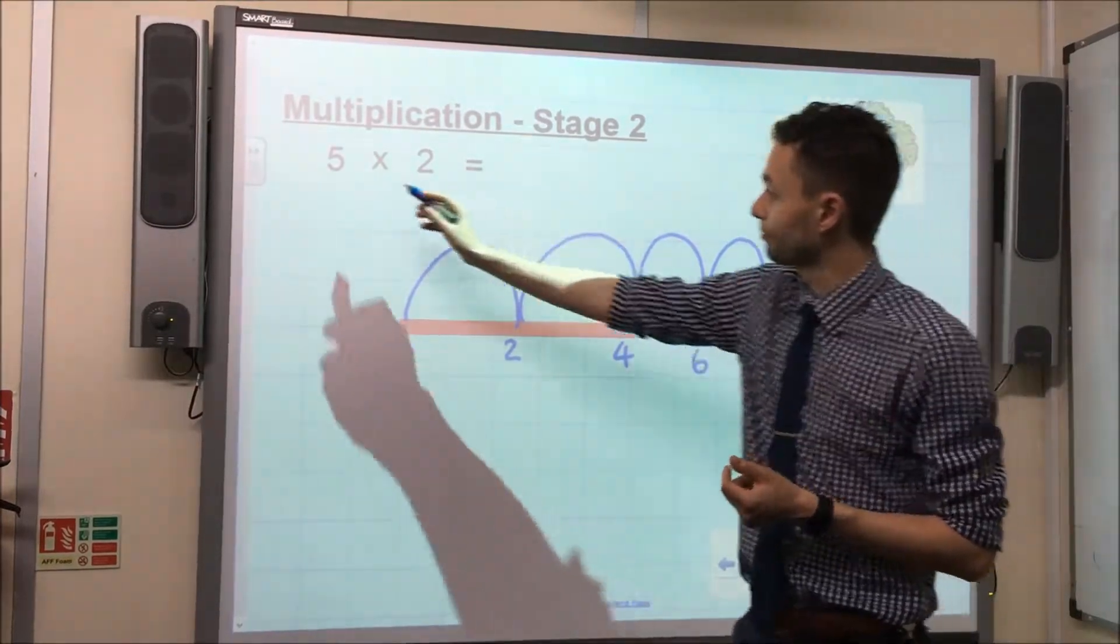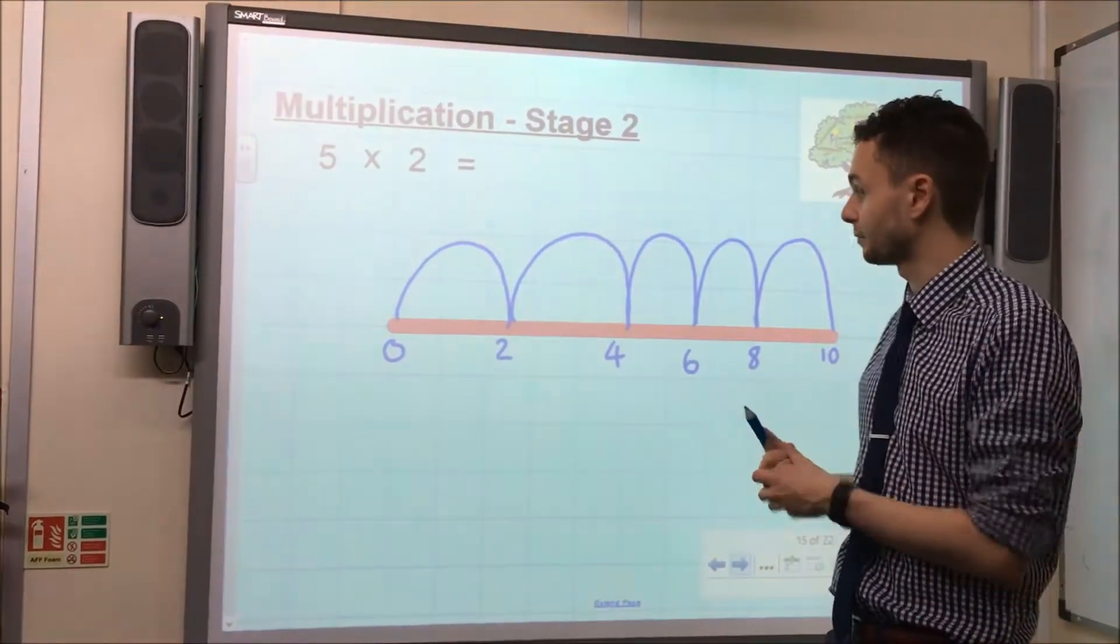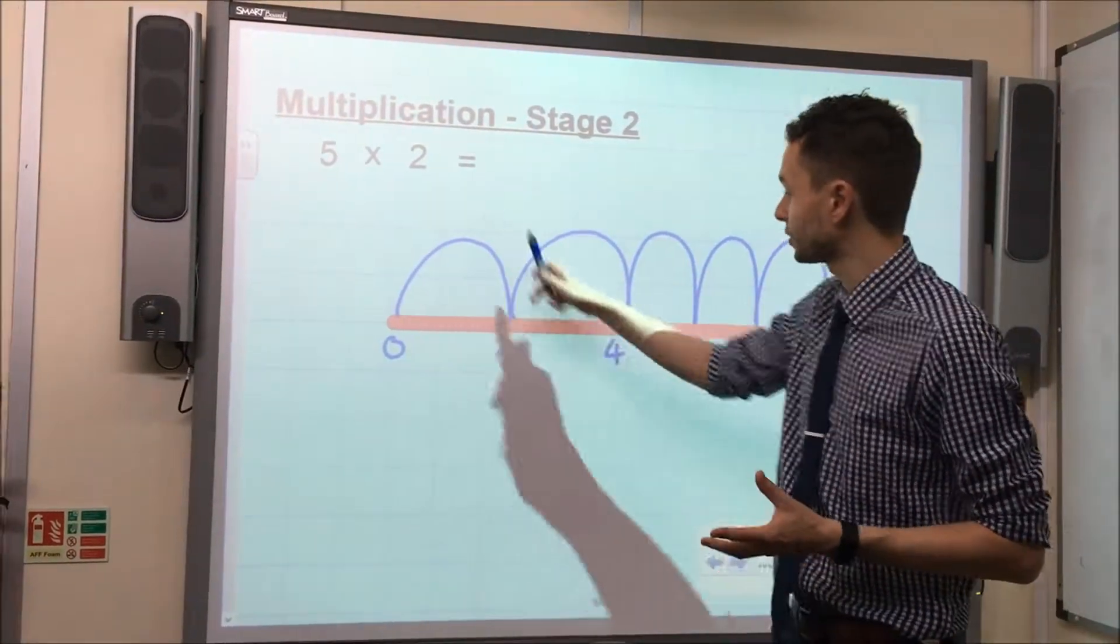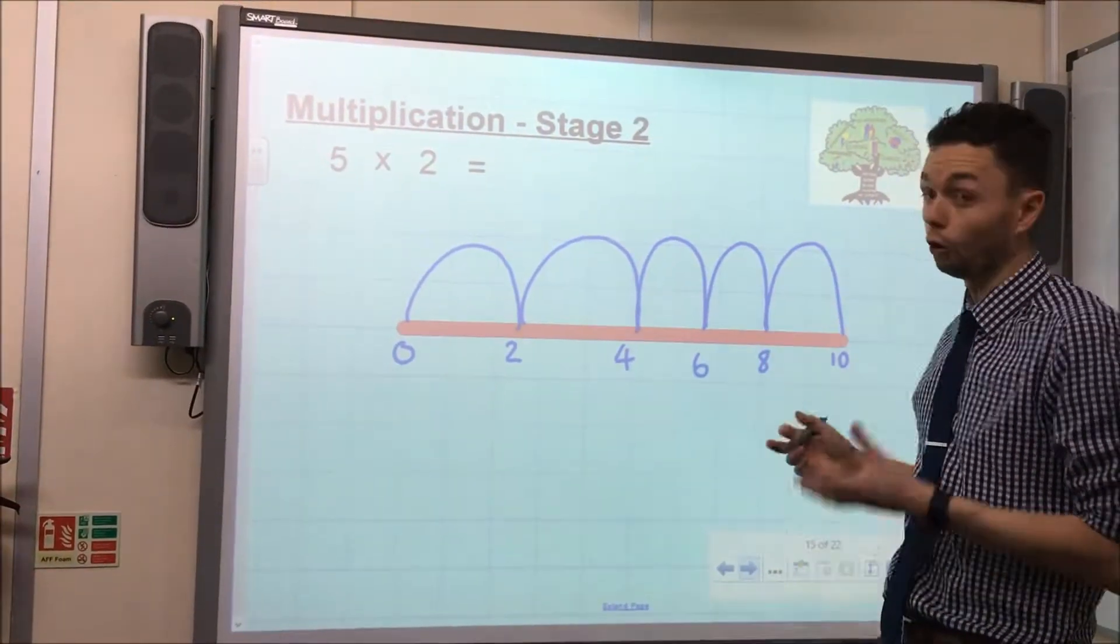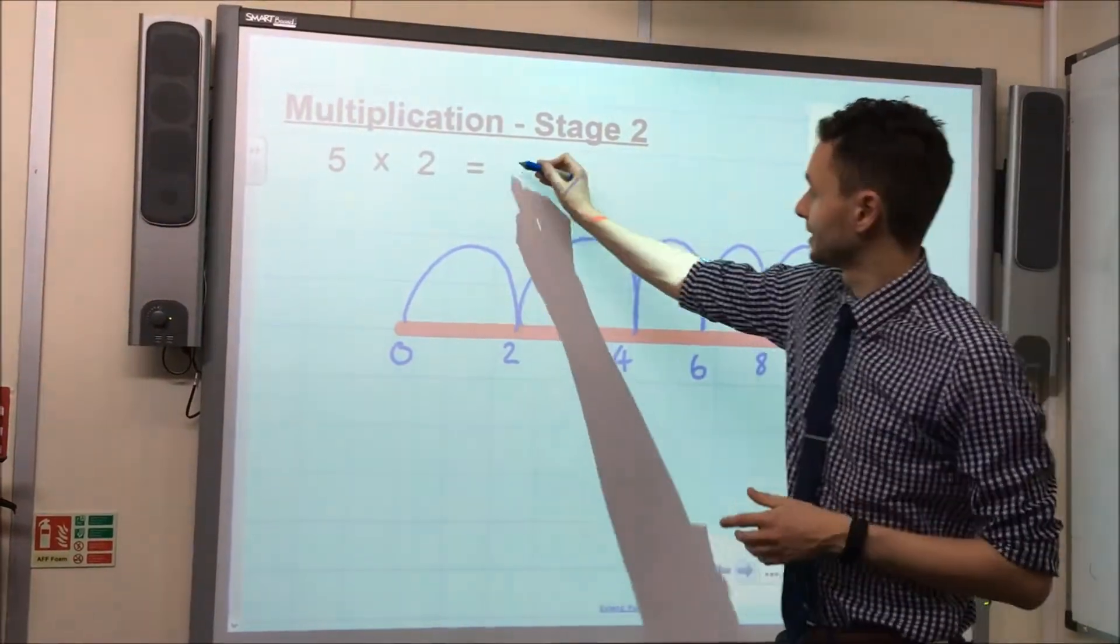So as you can see here, we have made 5 jumps, like the calculation says, and we have jumped in steps of 2. Therefore, the children can see that if we add 2 five times, or multiply 5 by 2, we will get the answer 10.